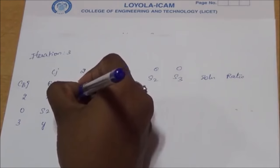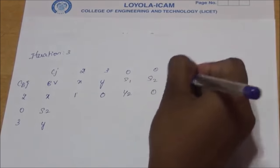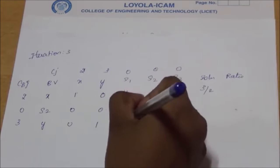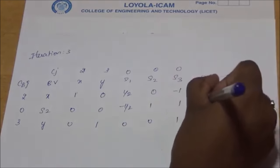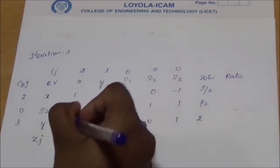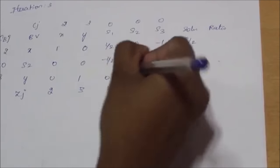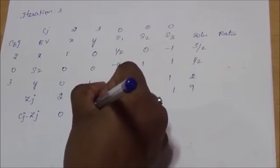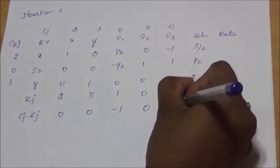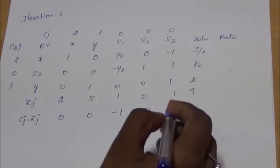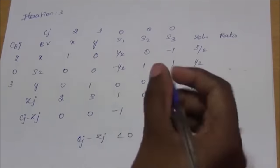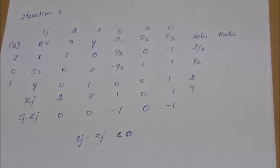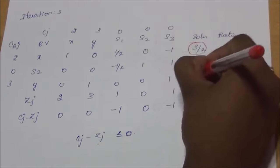Following the same process in iteration 3, we find zj = 2, 3, 1, 0, 1, giving z = 9. Then cj − zj: 2 − 2 = 0, 3 − 3 = 0, 0 − 1 = −1, 0 − 0 = 0, 0 − 1 = −1. All cj − zj values are ≤ 0, so we stop the iteration. For maximization problems, iteration continues until all cj − zj ≤ 0. The final values are x = 3/2, y = 2, and z = 9.